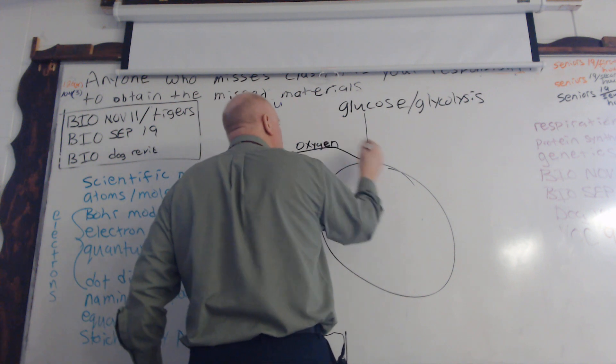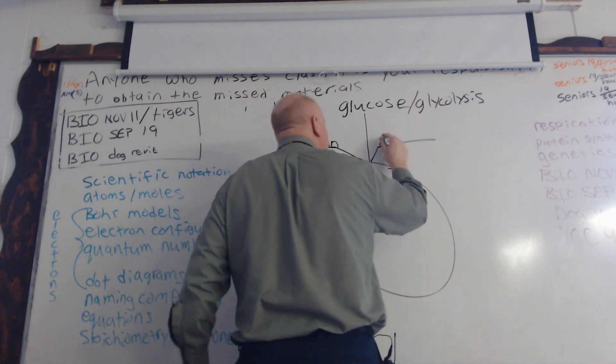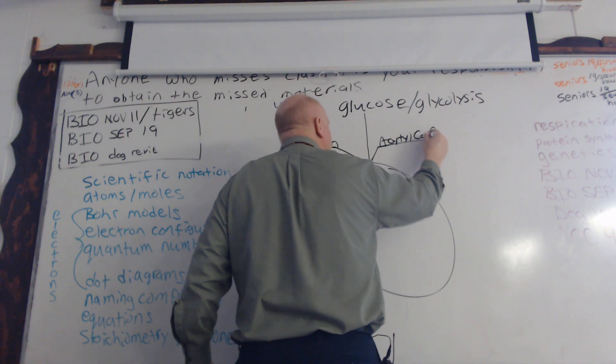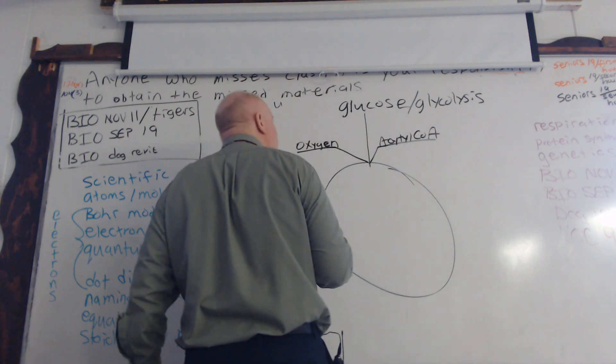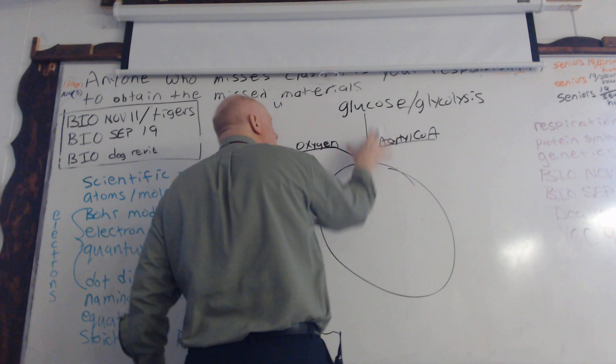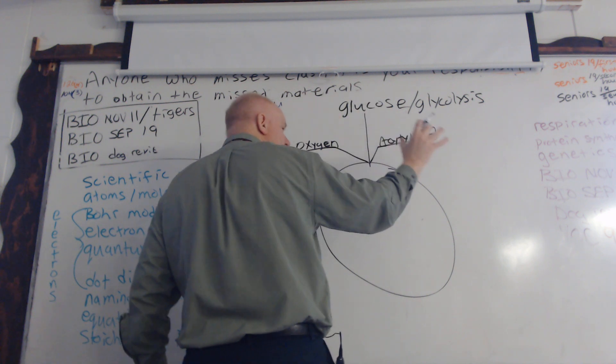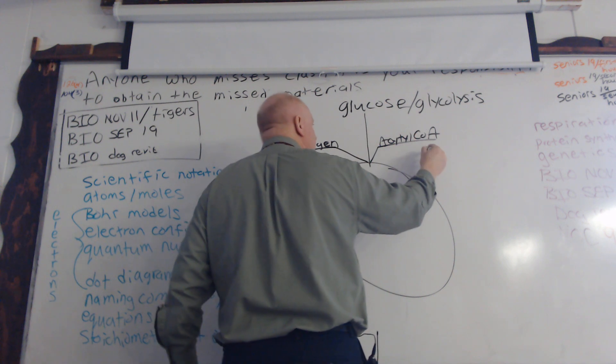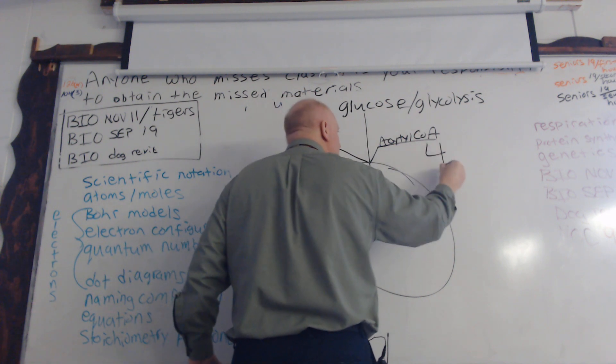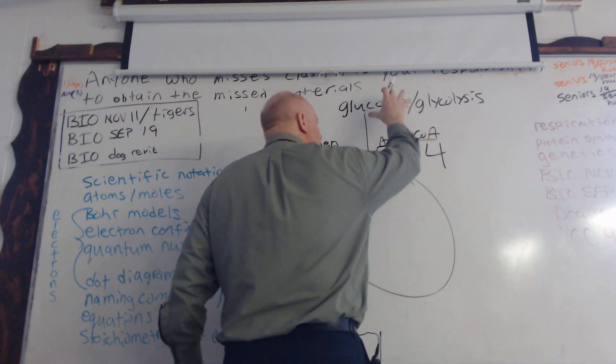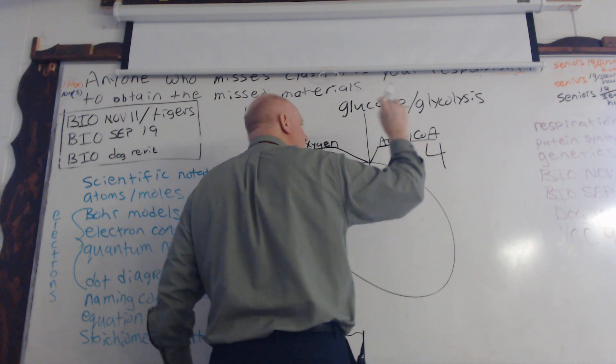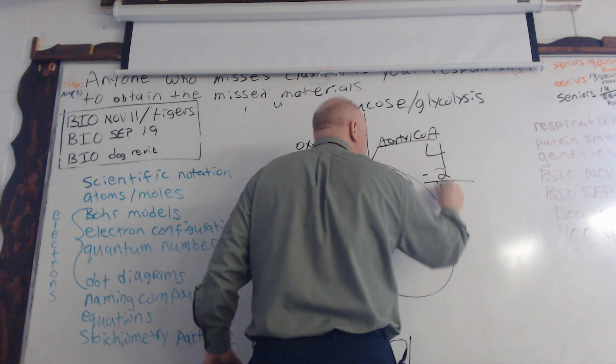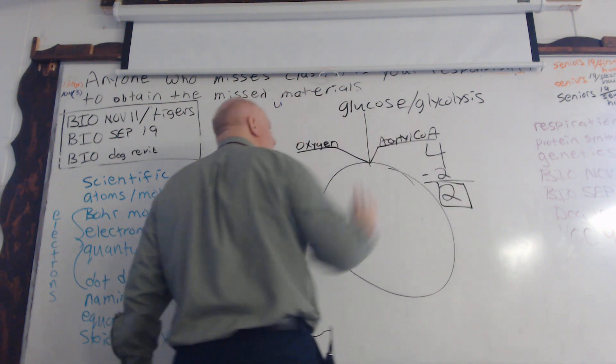In this entire process, how many total ATP do you get from this? Four, but the net is two. But then for this process to take place, it takes two of those, so then here is your magic number for glycolysis.